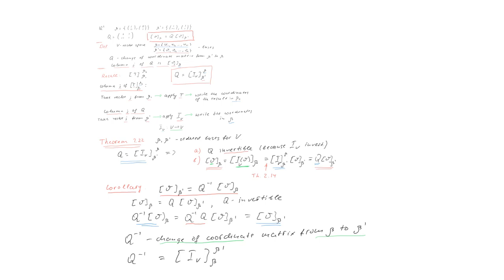We can also write this in terms of the linear transformation, only this time the bases will be swapped. In practice, if you want to use this formula, you will have to invert the matrix Q, and we will learn algorithms for how to do that. It is true that matrix Q is usually easier to write, and if you want the transition from old coordinates to new, there is some work involved in inverting Q. I hope it was clear what the change of coordinate matrix is, how to compute it, how to use it, and what it has to do with linear transformations. Thank you very much for your attention.